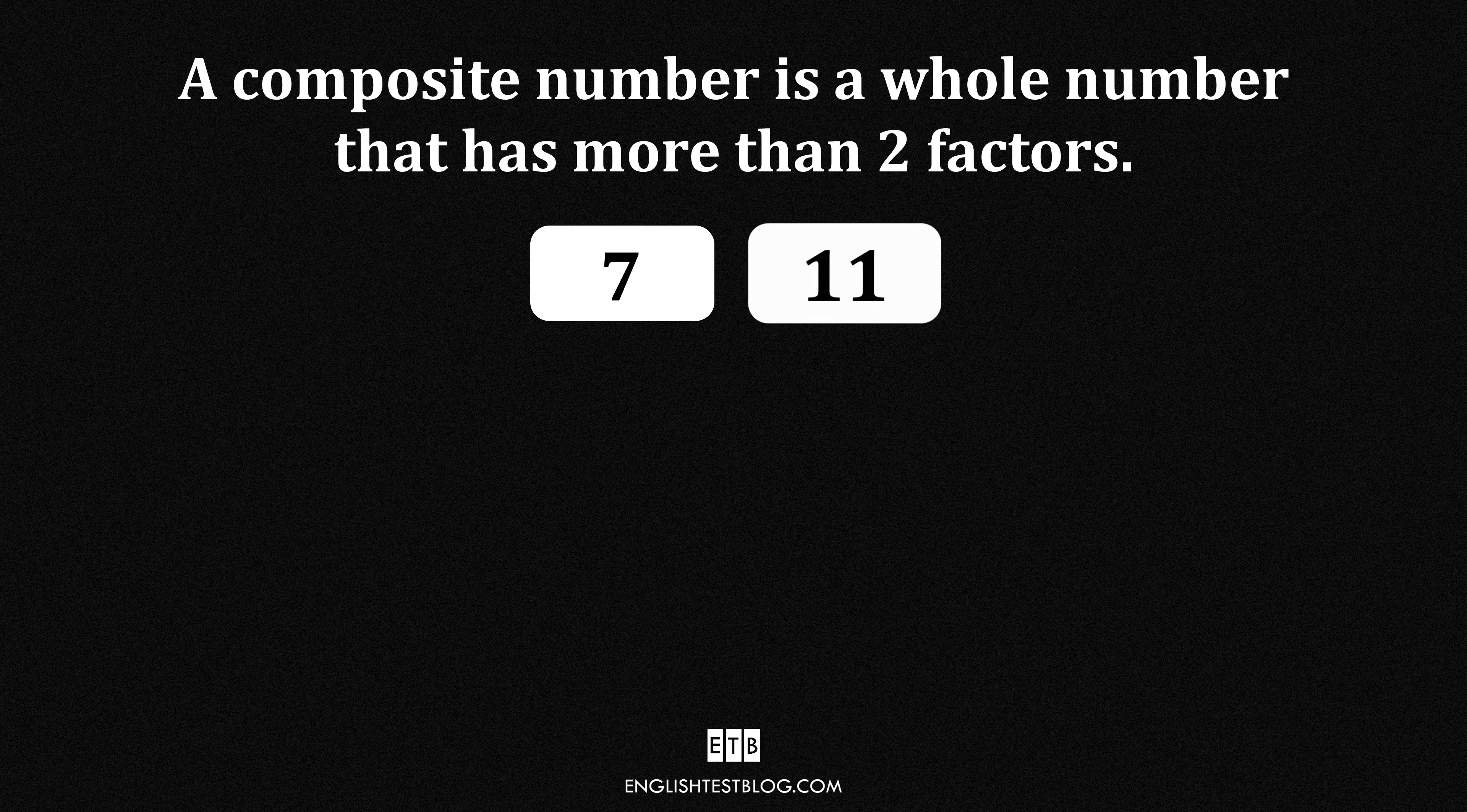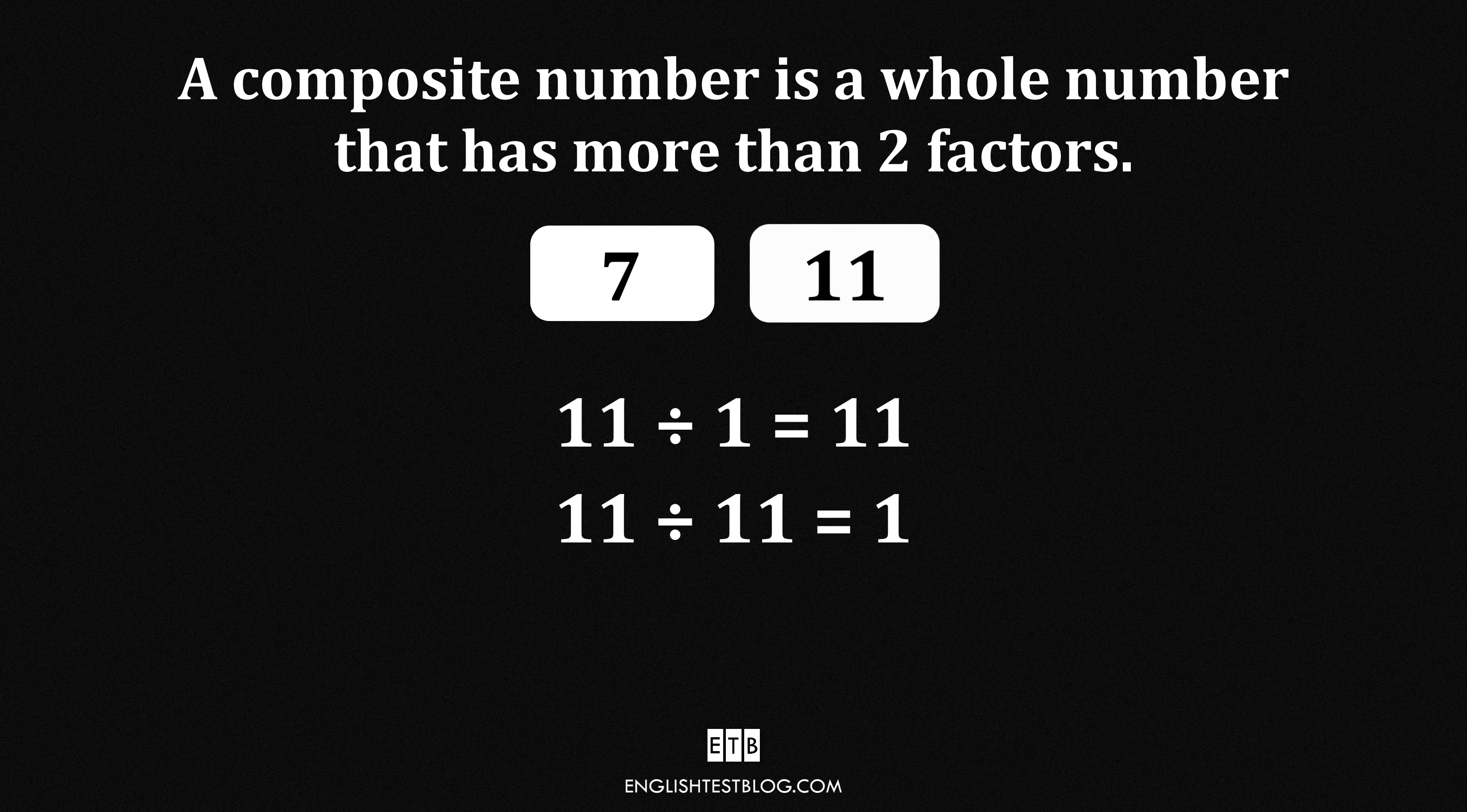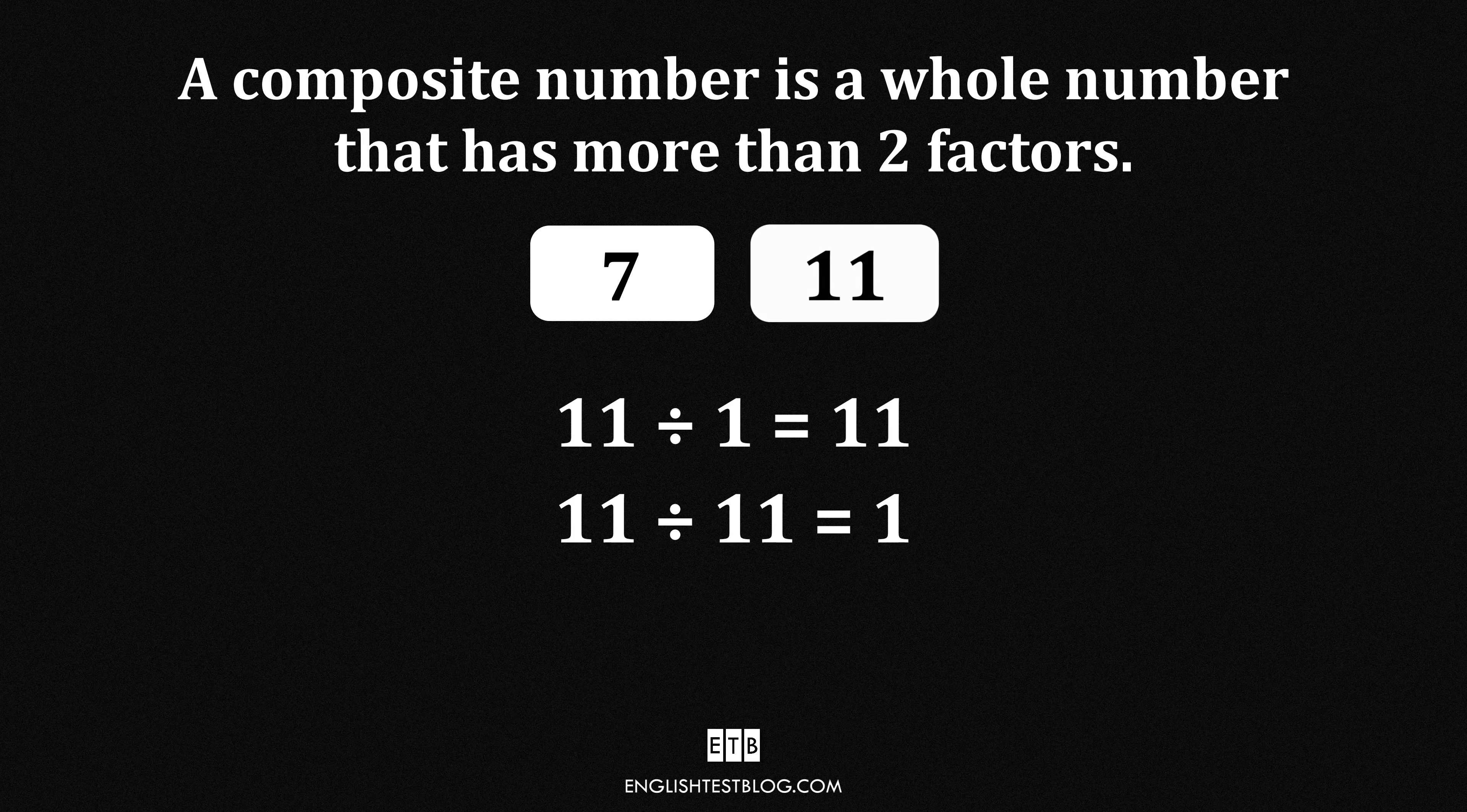11. The number 11 has only two factors, 1 and 11. Since it cannot be divided by any other numbers without leaving a remainder, it is a prime number, not composite.